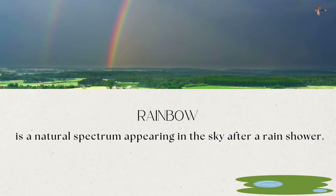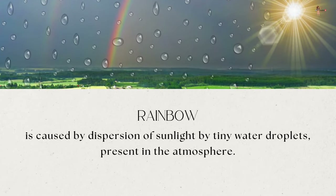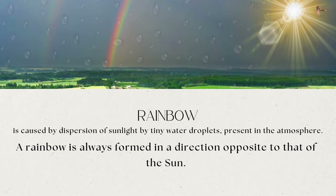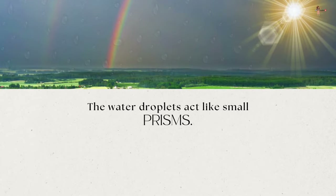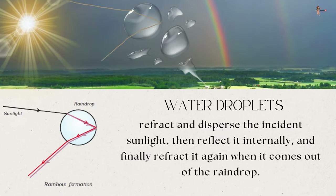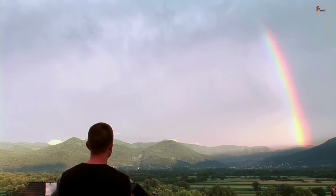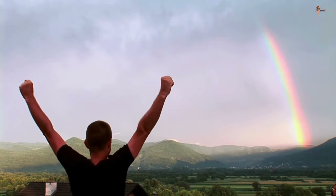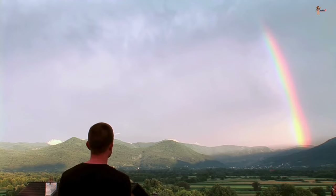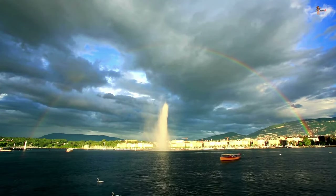A rainbow is a natural spectrum appearing in the sky after a rain shower, caused by the dispersion of sunlight by tiny water droplets in the atmosphere. A rainbow is always formed in a direction opposite to that of the sun. The water droplets act like small prisms — they refract and disperse the incident sunlight, then reflect it internally, and finally refract it again when it comes out of the raindrop. Due to dispersion and internal reflection, different colors reach the observer's eye. A rainbow can also be seen on a sunny day when looking through a waterfall or water fountain with the sun behind you.